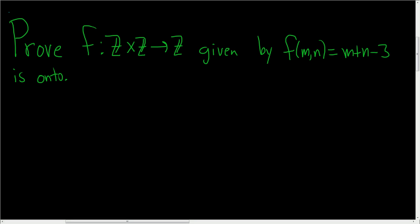So we have a function from Z×Z into Z, so this is all ordered pairs of integers, and this simply here is all integers, given by this following formula, and we have to prove it is onto.